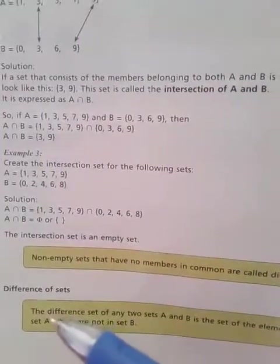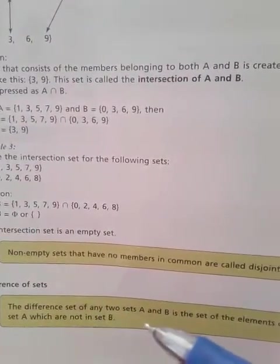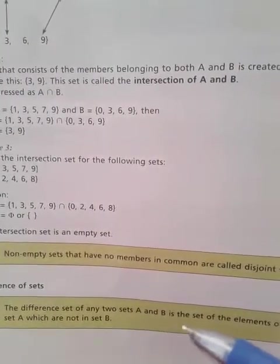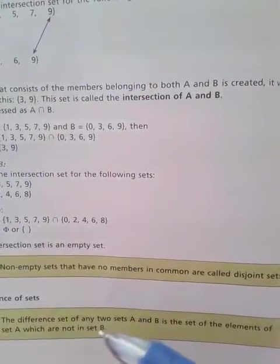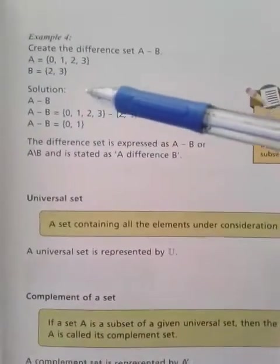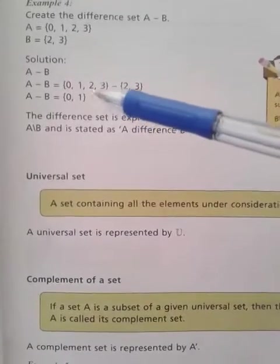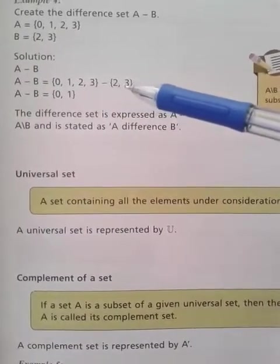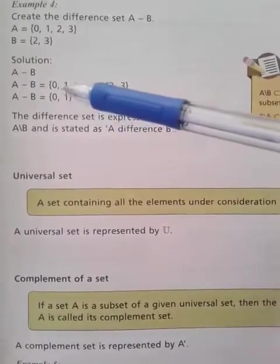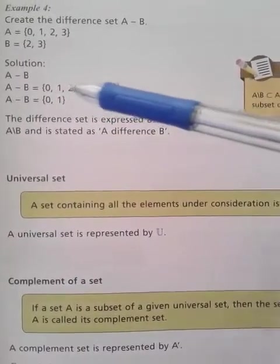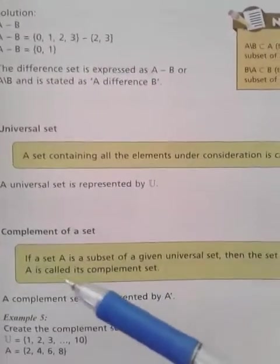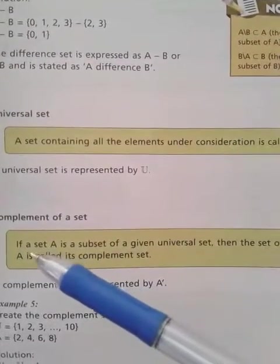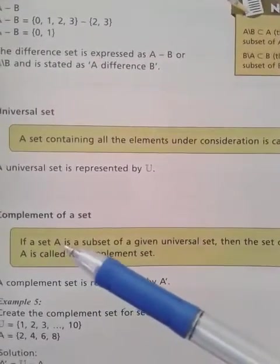Set Difference: The set of elements of set A which are not in set B is called A minus B. For example, to find A minus B, you write the elements of set A first, and then keep only those elements which are not in set B. Elements like two and three from the combined sets would form the answer.